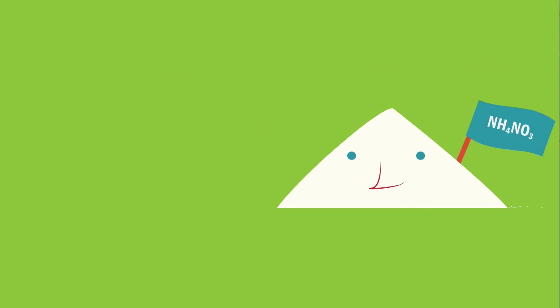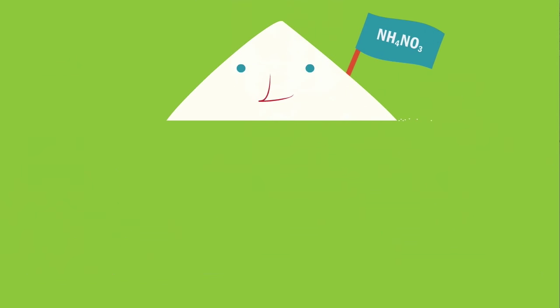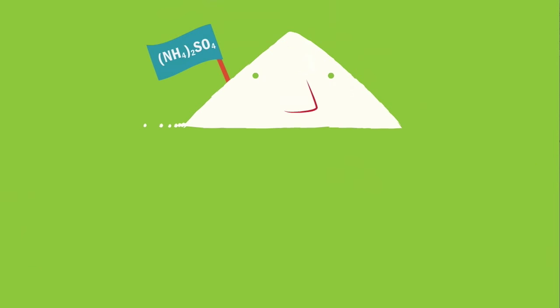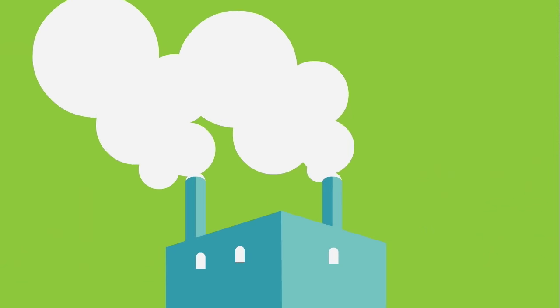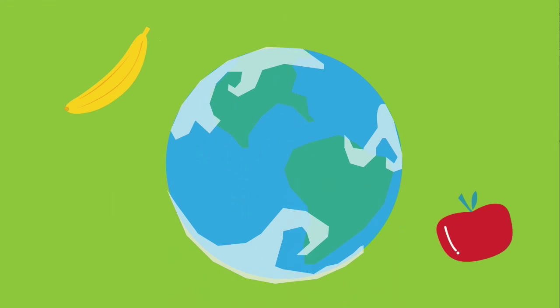Two very common artificial fertilizers are ammonium nitrate and ammonium sulfate. And you got it, they are made from ammonia. Ammonium nitrate is made from ammonia and nitric acid. Ammonium sulfate is made from ammonia and sulfuric acid. The constant production of these fertilizers is very important to sustain global food production.